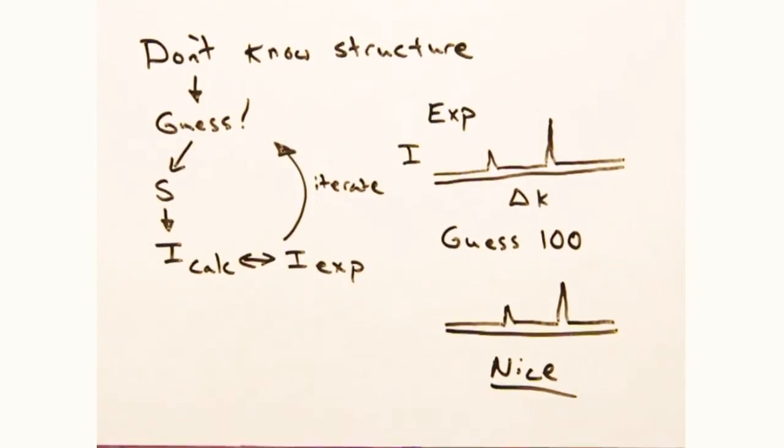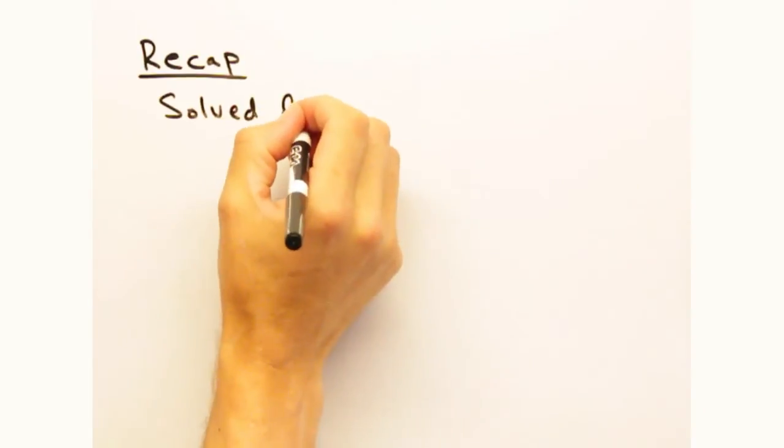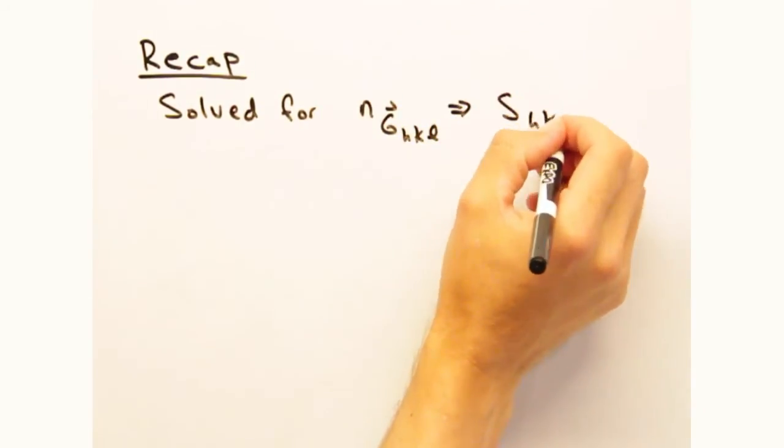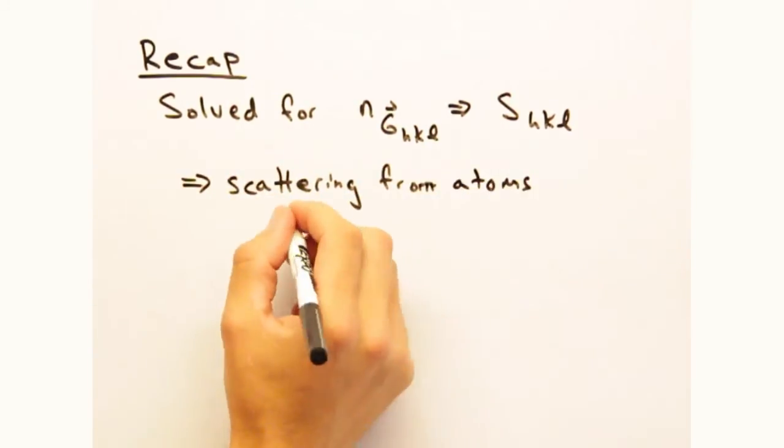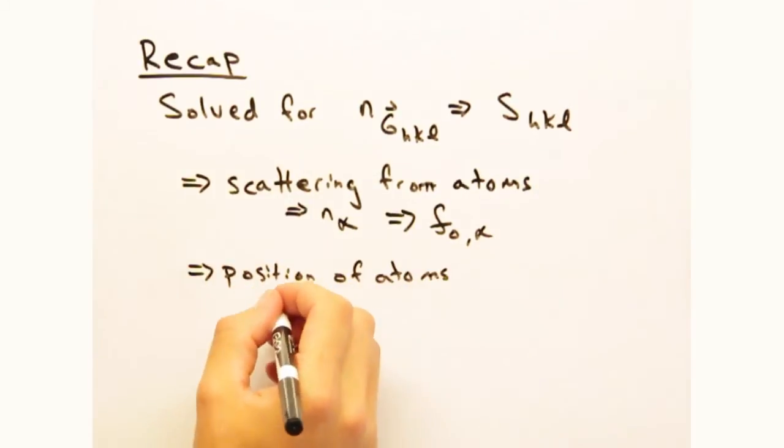So to recap, we were able to solve for the Fourier coefficients at a particular hkl in terms of the scattering density within the cell. We called that term the structure factor and separated it into terms that describe the scattering from each atom and terms that describe the position of the atoms within the cell.